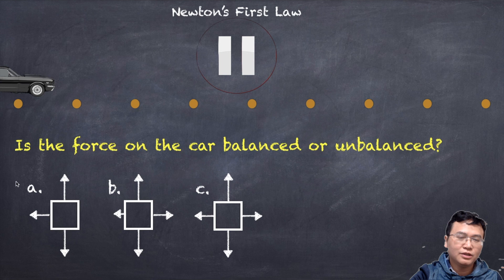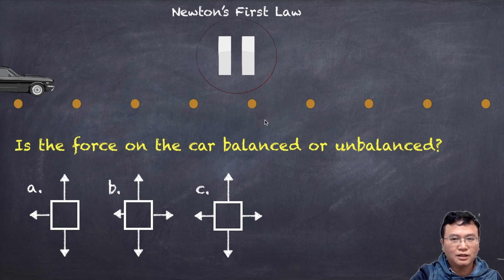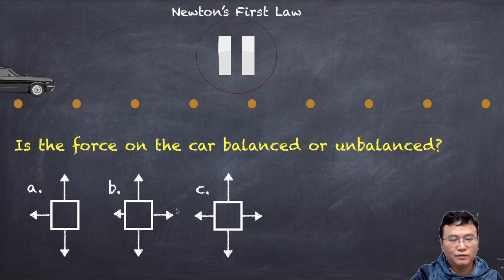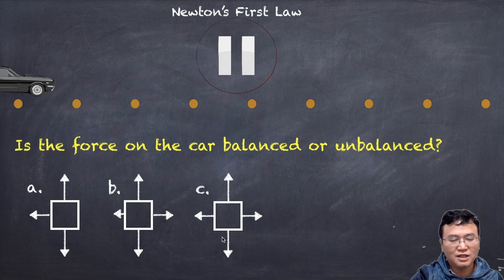Looking at this next oil-drop diagram, you will notice that the drops are equally spaced out. That implies the acceleration is zero — the velocity is constant, so the acceleration is zero. Therefore, it is a balanced force acting on the car. From the options, the only correct choice is C, because all the forces are balanced and the car is not accelerating; it has constant velocity.